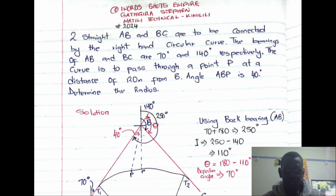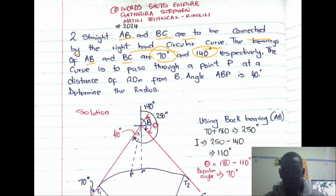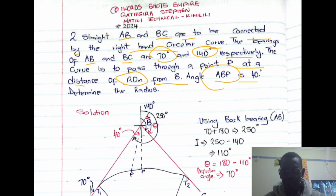Two streets AB and BC have to be connected by a right-hand circular curve. The bearings of AB and BC are 70° and 140° respectively. The curve is to pass through a point P at a distance of 120 meters from B, and the angle ABP is 40°. Determine the radius.